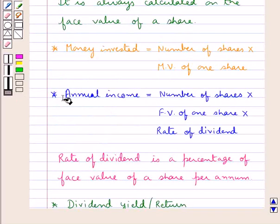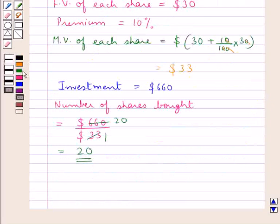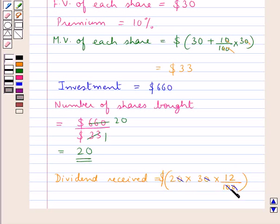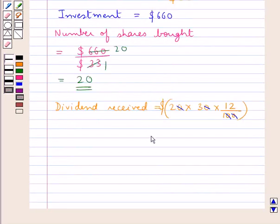Now the dividend received is the same as the annual income, that is: number of shares multiplied by face value of one share multiplied by rate of dividend. So the dividend received equals 20 multiplied by 30 multiplied by 12%, that is 12 upon 100. This gives us $72 as the dividend received.